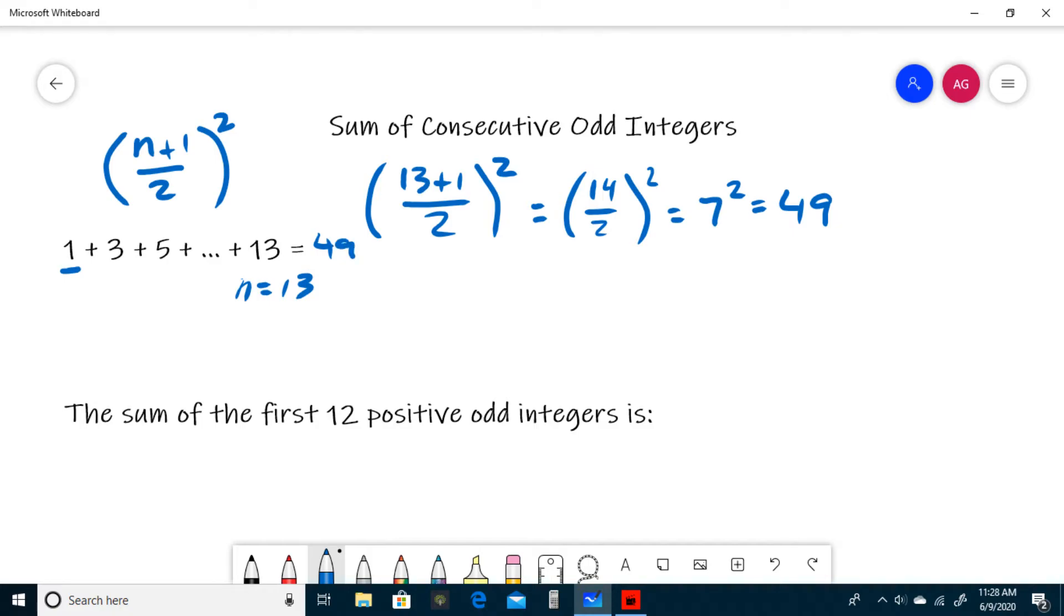To recap, just take this last number in your sequence and plug it into this formula. Make sure you have the sum of consecutive odds and the sequence starts with a 1. Just take this 13, 13 plus 1 is 14, divided by 2 is 7, squared gives you 49.